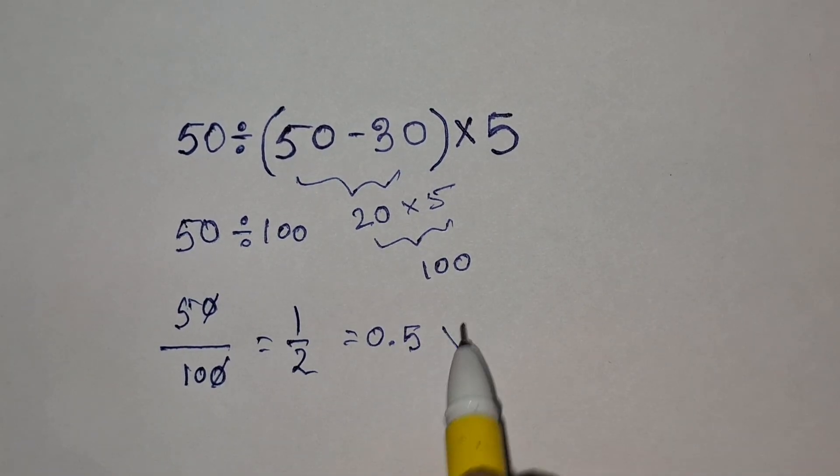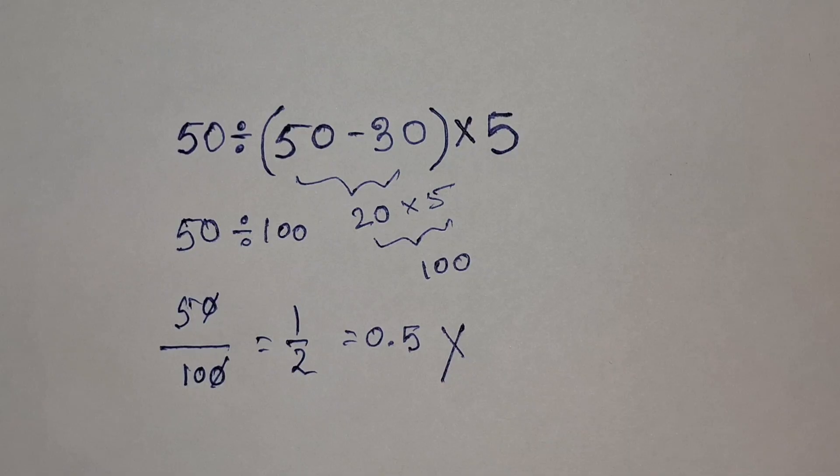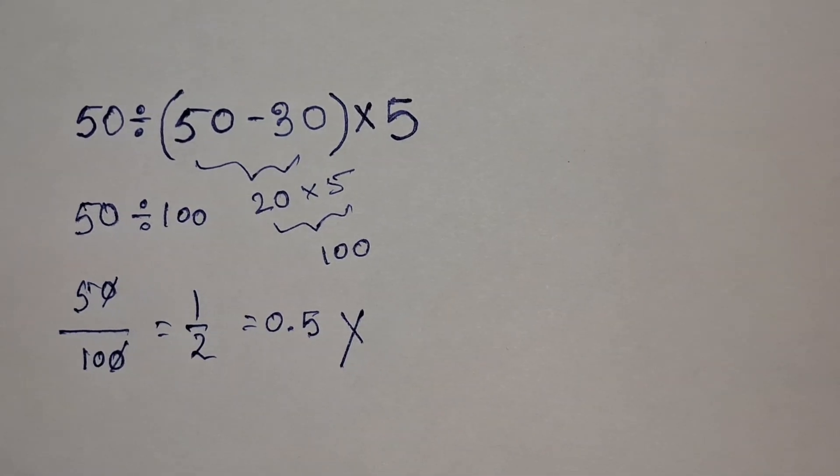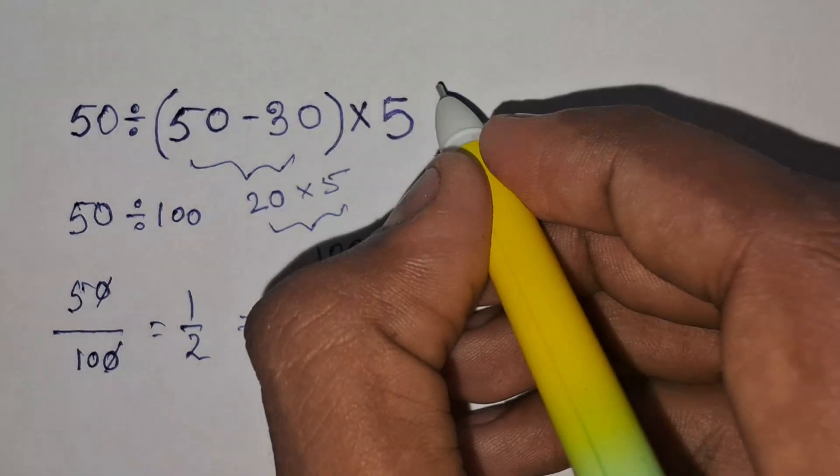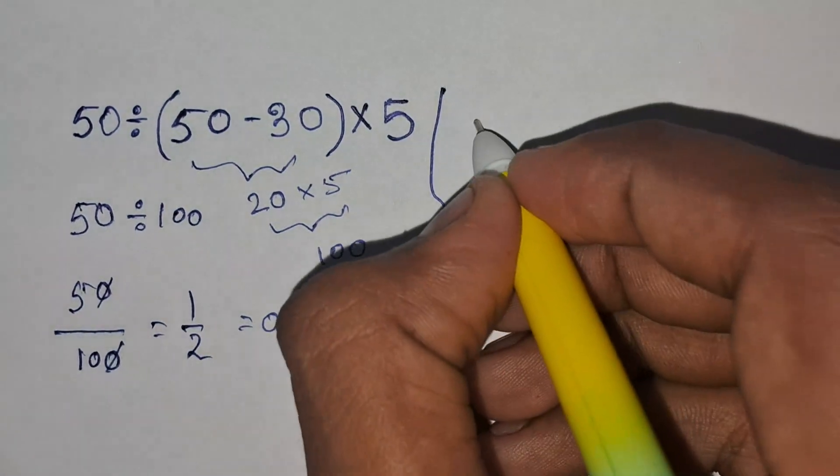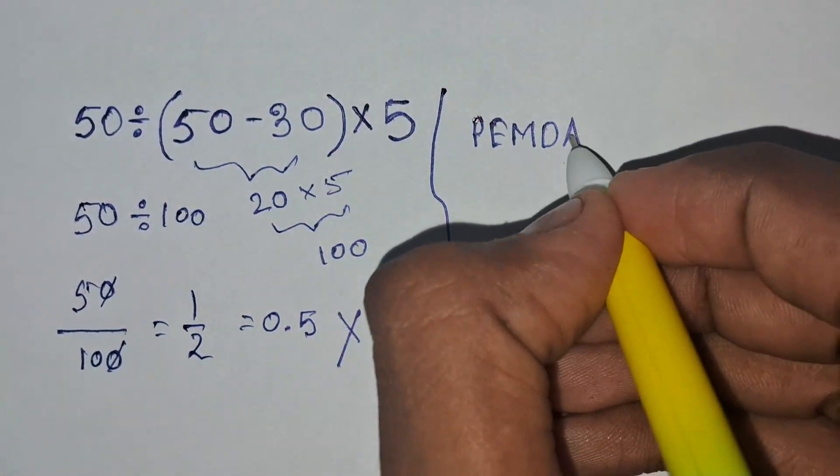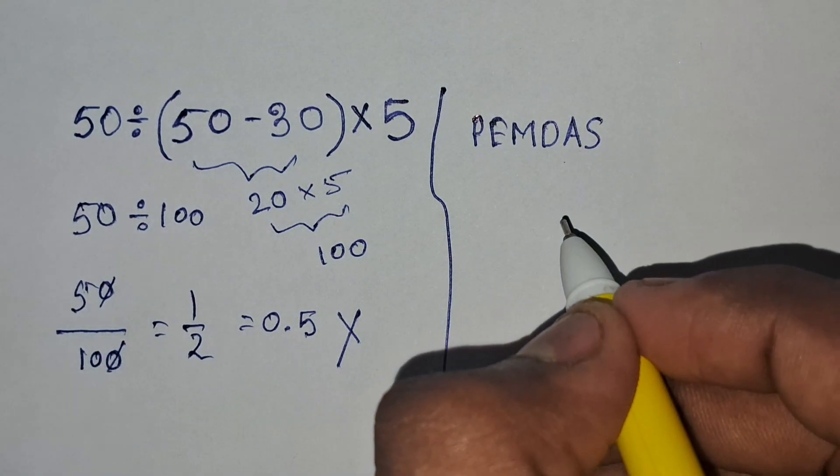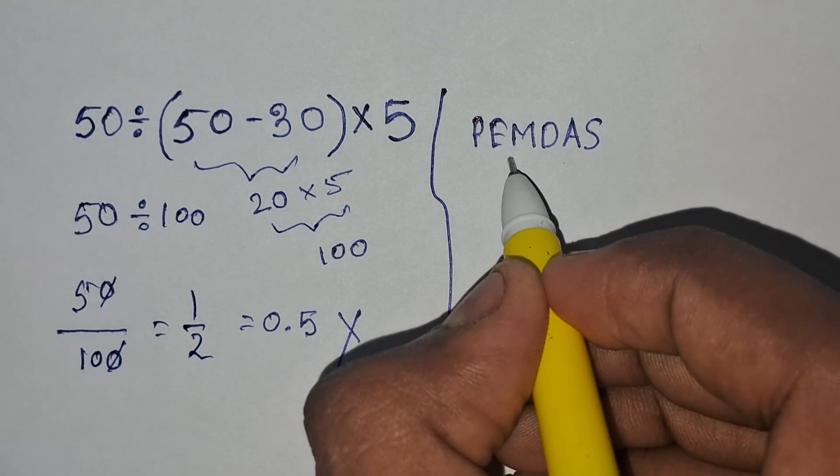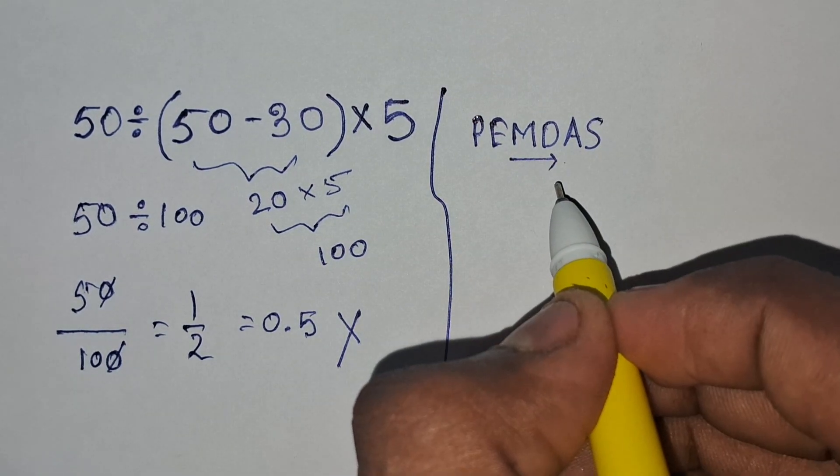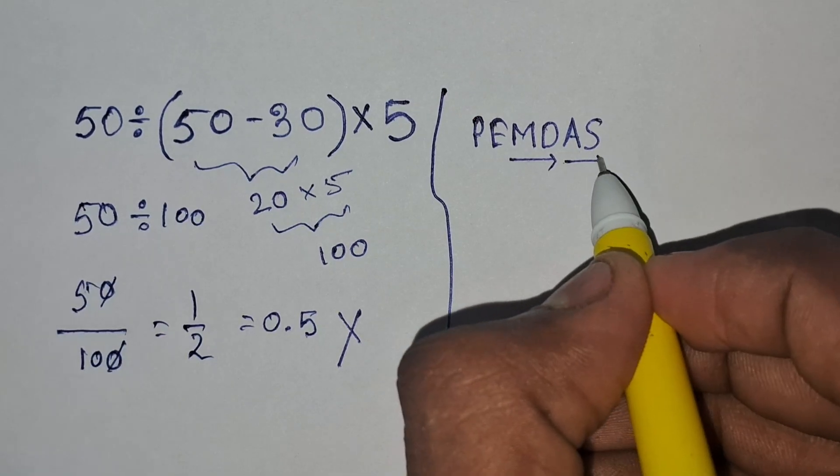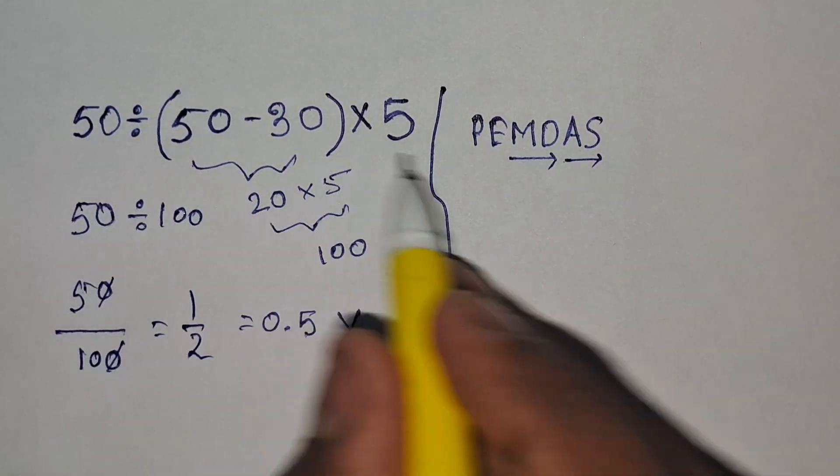But 0.5 is not the correct answer for the expression. According to the order of operations, which is called PEMDAS or sometimes called BODMAS, where P and B stand for parentheses or brackets, E for exponents, M and D stand for multiplication and division, and A and S stand for addition and subtraction, we have to solve multiplication and division from left to right.